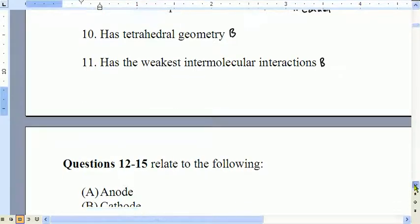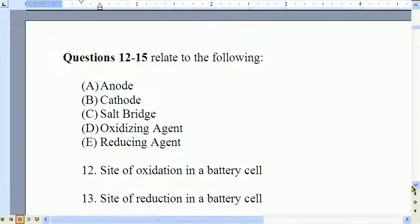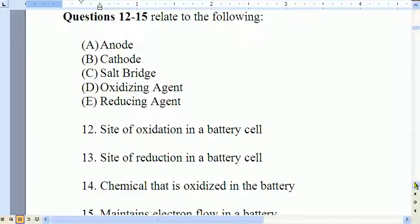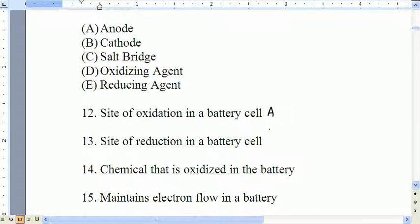Site of oxidation in the battery, that's going to be A. Site of reduction in the battery cell, that's going to be B. Chemical that is oxidized in the battery. Okay, this is tricky. So it can't be anode or cathode, because those aren't chemicals. Those are spaces. So the chemical that is oxidized is going to be E, and maintains electron flow. That's going to be C.